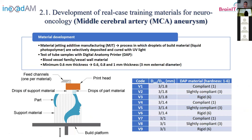The first thing we did was make tubes with different thicknesses — for example, 3 mm diameter with 0.6, 0.8, and 1.0 mm wall thicknesses. We printed these tubes with different materials from the vessel wall family, with different hardness values: 1, 3, and 6, where 6 is the most rigid and 1 is the least rigid.